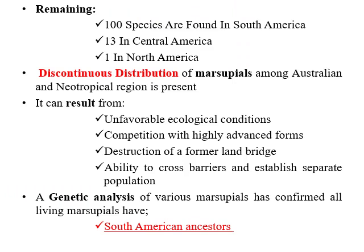As mentioned, most marsupial species are confined to the Australian region. The remaining marsupial species are distributed among different American regions: 100 species are found in South America, 13 are present in Central America, and one is located in North America. This discontinuous distribution of marsupials between the Australian and Neotropical regions may be due to unfavorable conditions elsewhere, competition with highly advanced forms, the destruction of a former land bridge between these regions, or the ability to cross barriers and establish separate populations.